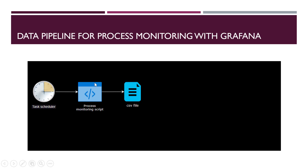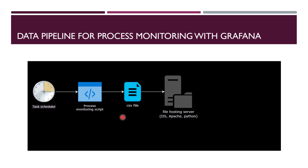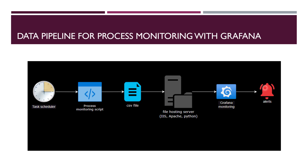If you periodically trigger this batch script using a task scheduler, it will continuously update the CSV file. Now Grafana needs to monitor this CSV file continuously. You can host the CSV folder using a file server — IIS, Apache, or a simple Python server — so the file is accessible through a URL. Once hosted, Grafana can connect to the URL and continuously monitor the CSV file, sending an alert if the value is zero. No database needed.